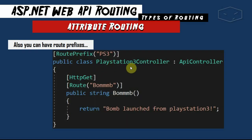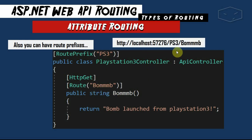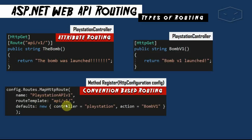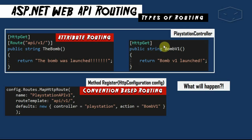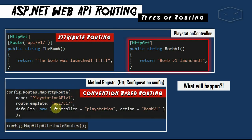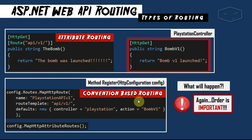We can change the matching order using the order attribute — for example, setting order=2 on the first route and order=1 on the second makes the second match first. We can also use route prefixes: the PlayStation3 controller has the prefix ps3, so the Bomb action maps to the address ps3/bomb. Finally, we can mix attribute routing and convention-based routing — for example, an attribute route api/v1 alongside a convention-based route api/v1 with controller=PlayStation and action=BombV1. Order still matters in this mixed scenario.